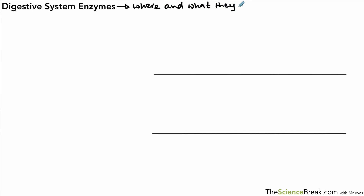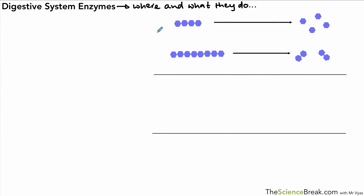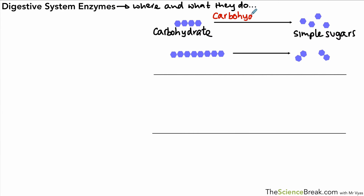This whole process is controlled by various different enzymes that break down large insoluble molecules into small soluble ones. We need to know the names of the enzymes, where they are produced, and what they do. The first food type is carbohydrate, which is broken down into simple sugars by enzymes called carbohydrases.